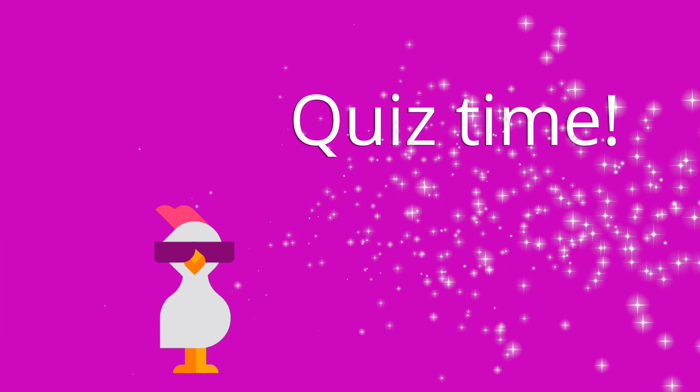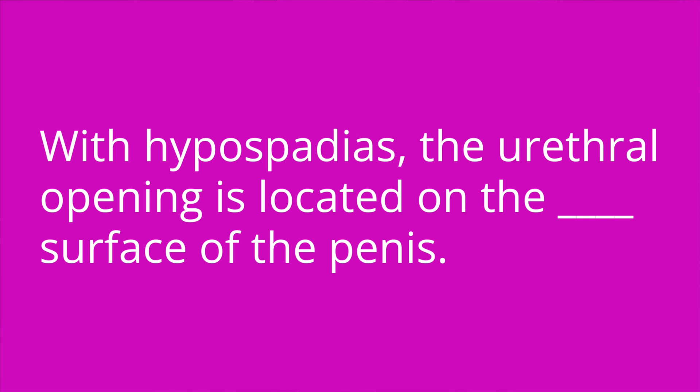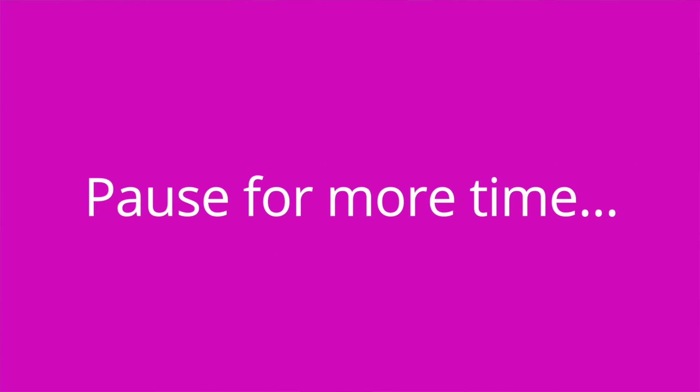It's quiz time and I've got three questions for you. Question number one: with hypospadias, the urethral opening is located on the blank surface of the penis. The answer is the ventral surface or underside of the penis.